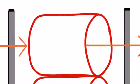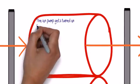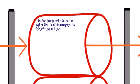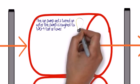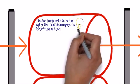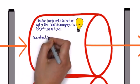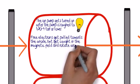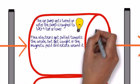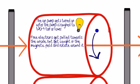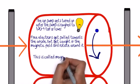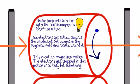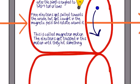Zooming up on that, we're going to actually rough this pump down to 10 to the minus 4 torr or lower if we can, and turn it on. 7,000 volts is what we typically use, but the ion pump will operate between 3 and 7,000. Free electrons are going to get pulled towards that anode assembly, but they're going to get caught in that magnetic field and rotate around it. This is actually called magnetron motion, and the electrons get trapped until they actually hit something like a gas molecule.